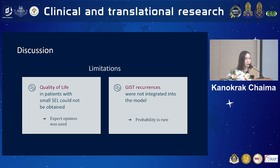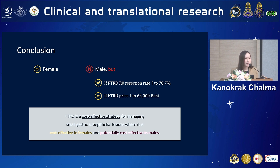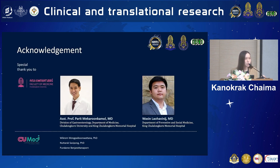For limitations, the quality of life of patients with small sub-epithelial lesions could not be obtained, therefore we used expert opinion. Additionally, recurrences were not integrated into the model, although the probability of having recurrences was pretty rare. In conclusion, FTRD is a cost-effective strategy for managing small gastric sub-epithelial lesions — it is cost-effective in female and potentially cost-effective in male. I would like to express heartfelt gratitude to my professors, Dr. Parit and Dr. Wasin, and everybody on the slide. Thank you very much.